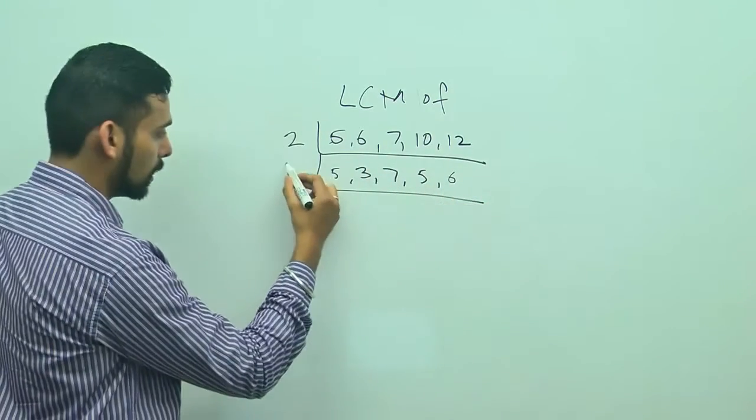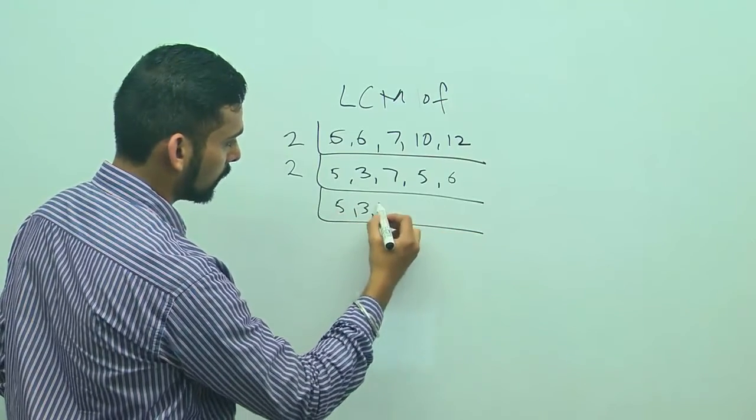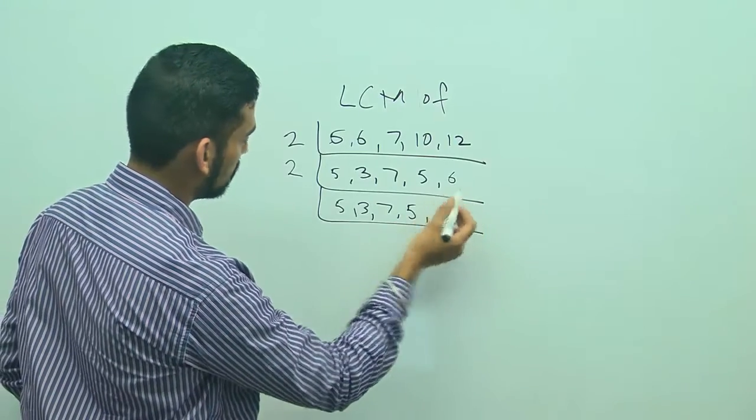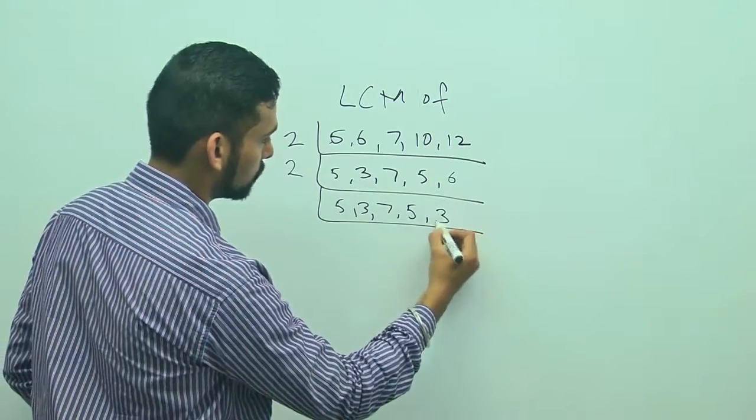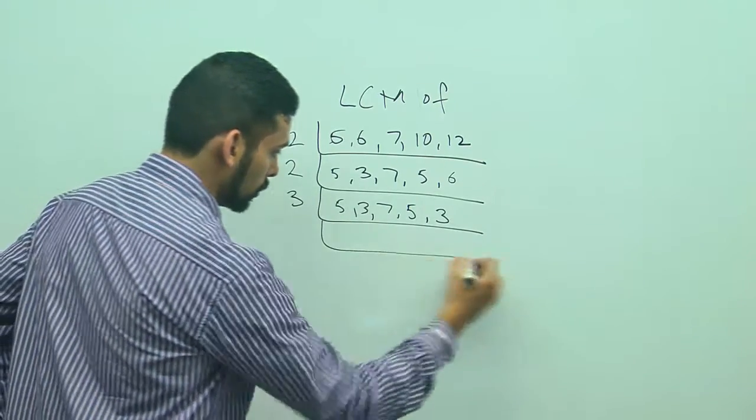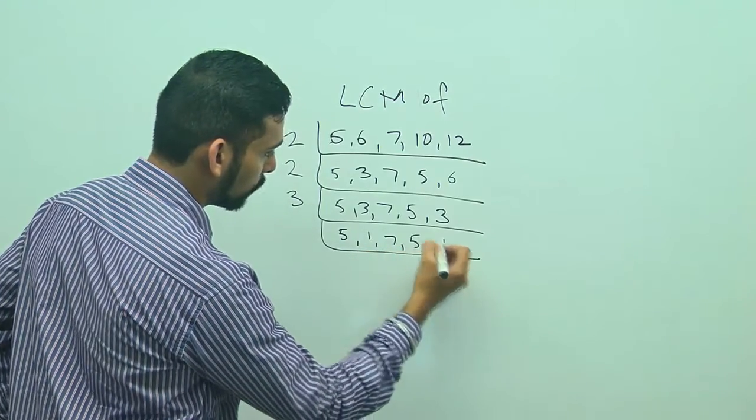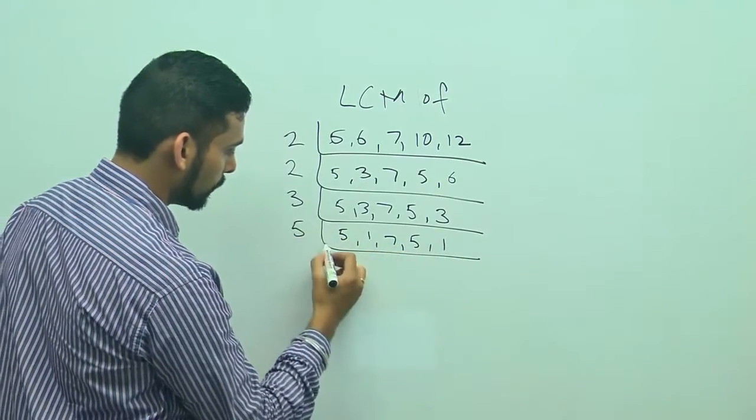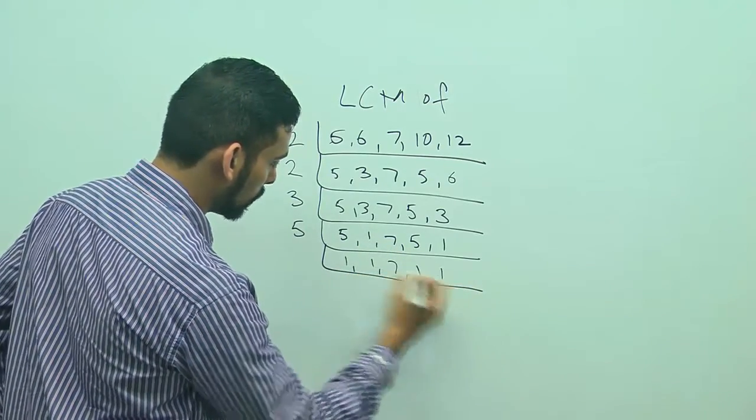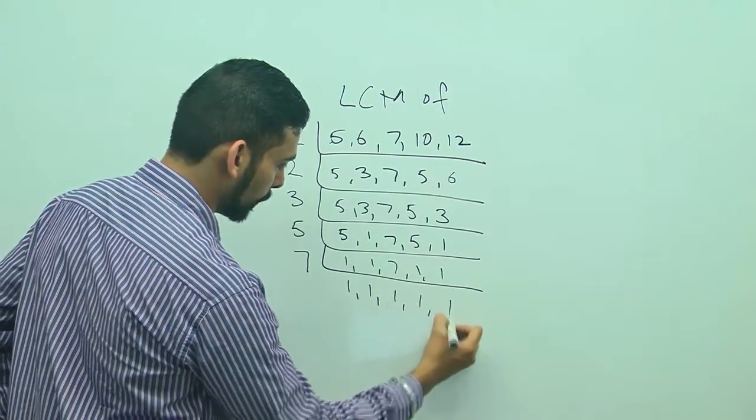Now I can't divide by 2 anymore, so I will divide by 3. So I will get 5, 1, 7, 5, and 2. Divide by 5 using the simple method to calculate LCM: 1, 1, 7, 1, and finally by 7. So I get 1 everywhere.